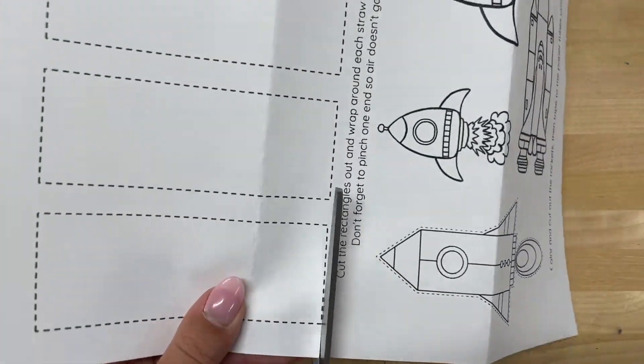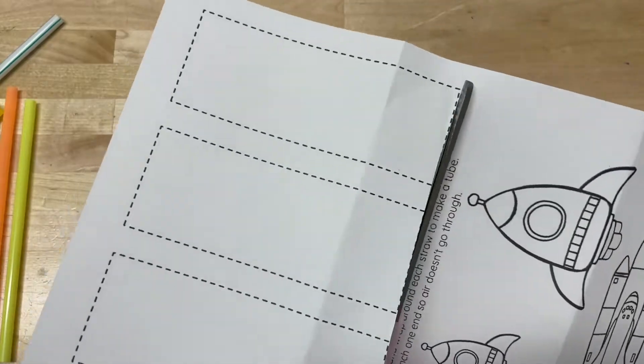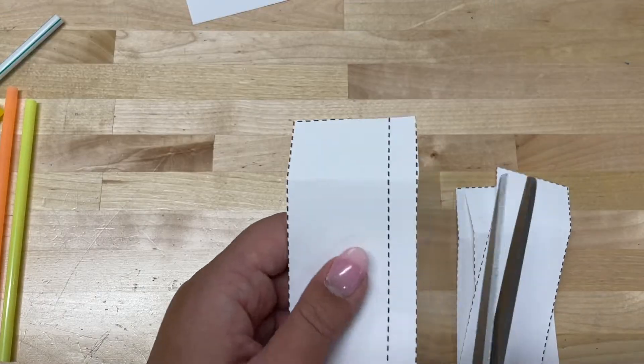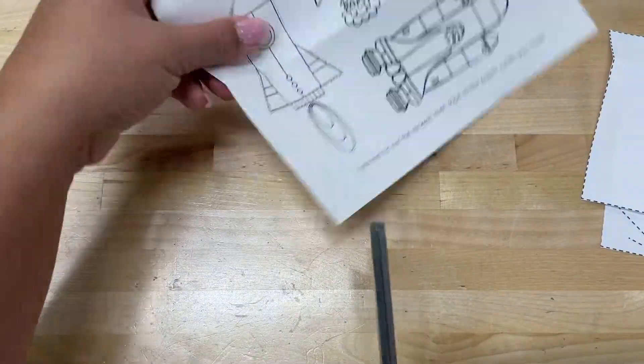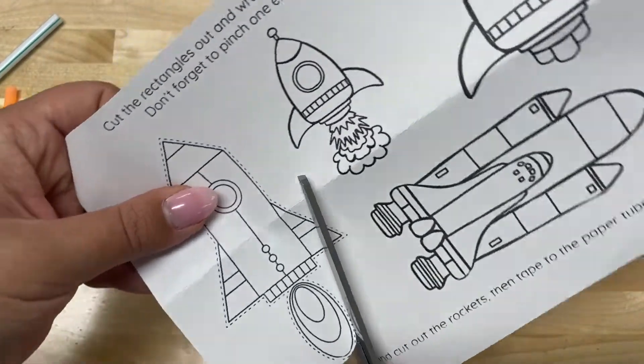Cut out the rectangle templates and the rocket templates.